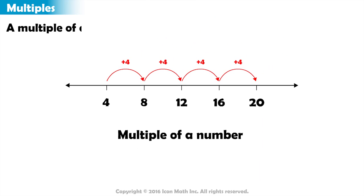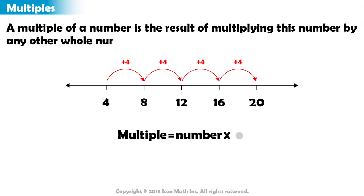In general, a multiple of a number is the result of multiplying this number by any other whole number.